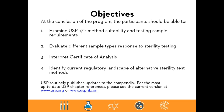Our objectives today: at the conclusion of the program you should be able to examine USP 71 method suitability and test sample requirements, evaluate the different sample types and their response to sterility testing, interpret certificates of analysis, and identify current regulatory landscapes and issues in alternative sterility test methods. One important point: the USP routinely publishes updates to the compendia, and this presentation covers the current version.